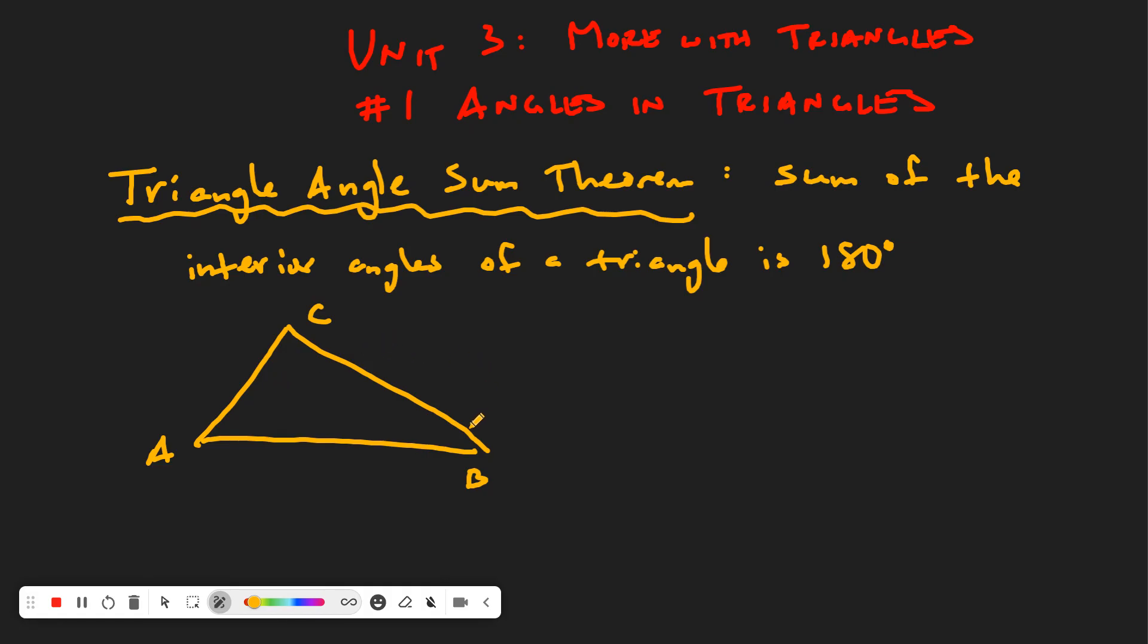What this theorem says is that if you add the measure of Angle A plus the measure of Angle B plus the measure of Angle C, you're going to get 180. It's going to be your job to do some problems involving this idea. The three interior angles.